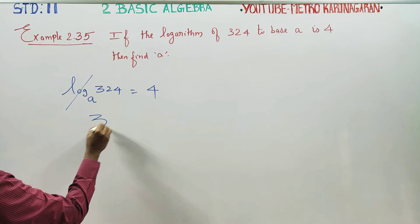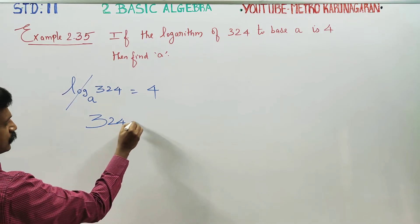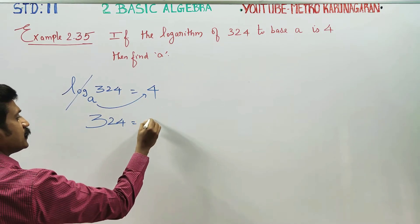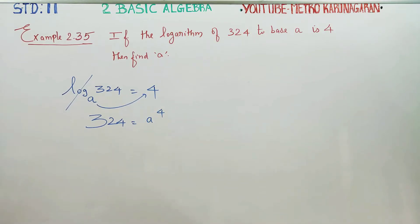Now, log is cut and exponential form. 324 is equal to A to the power 4.